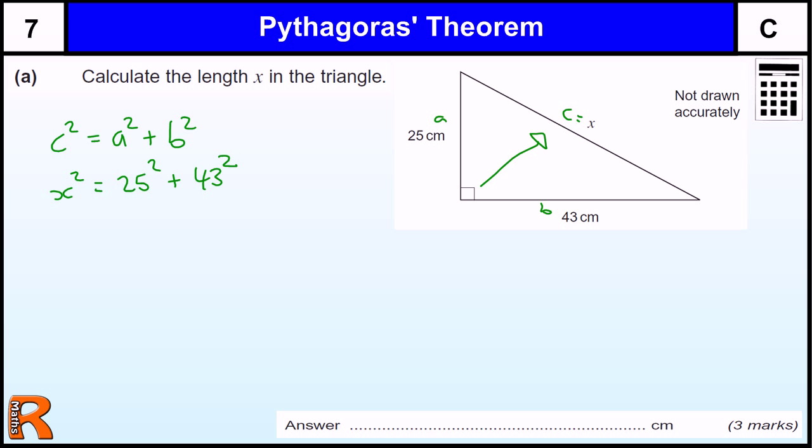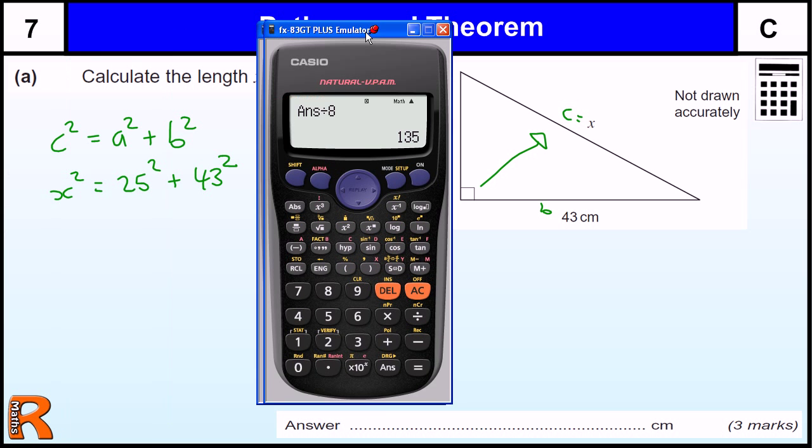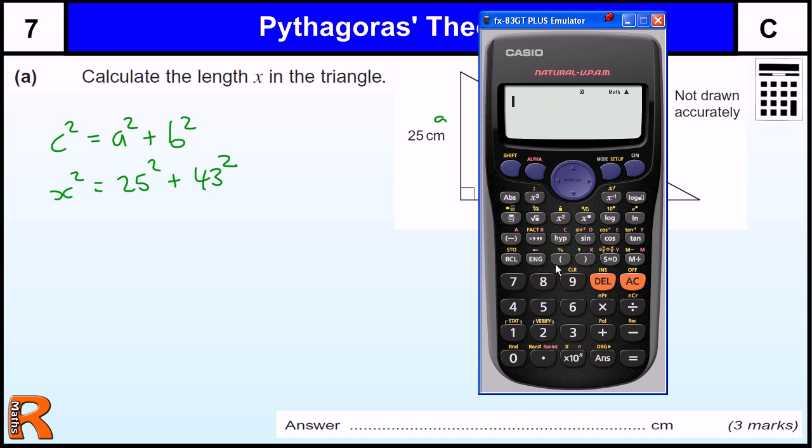Then we get our calculator out. 25 squared is 625. 43 squared, 1849. Add those two together. We get 2474. That's what X squared equals.